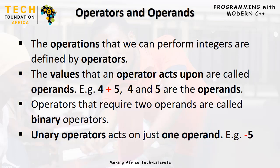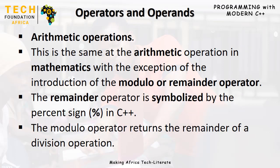The operations that we can perform on integers are defined by operators. The values that an operator acts upon are called operands. In an addition expression such as 4 + 5, four and five are the operands and the addition is the operator. Operators that require two operands are called binary operators. Operators like the minus operator that act on just one operand are called unary operators — for instance, negative five.